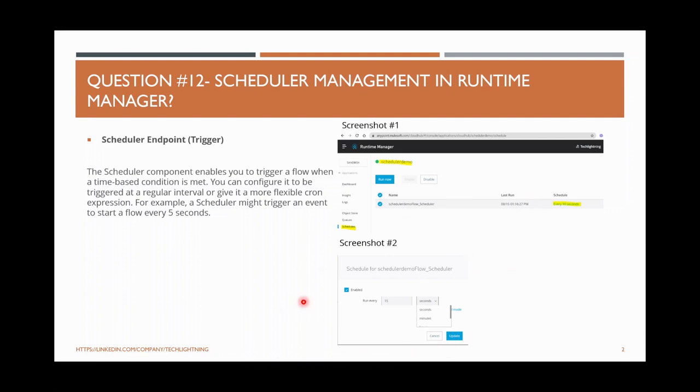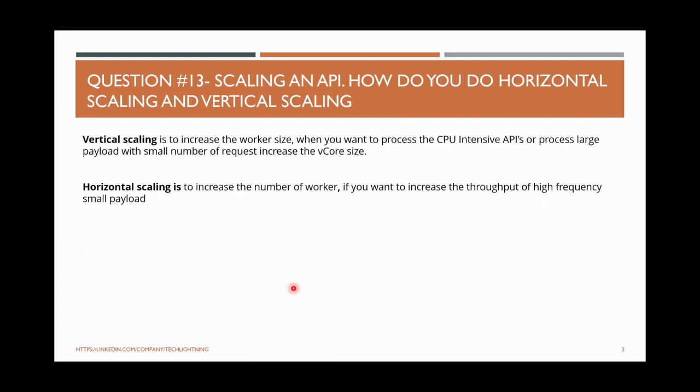The scheduler component enables you to trigger the flow when a time-based condition is met. You can configure it to trigger at a regular interval or give it a more flexible cron expression. For example, a scheduler might trigger an event every 5 seconds, 10 seconds, or every one minute. To manage it, go to Runtime Manager, select the application, click Schedulers, and from there you can edit and change your scheduler timings.